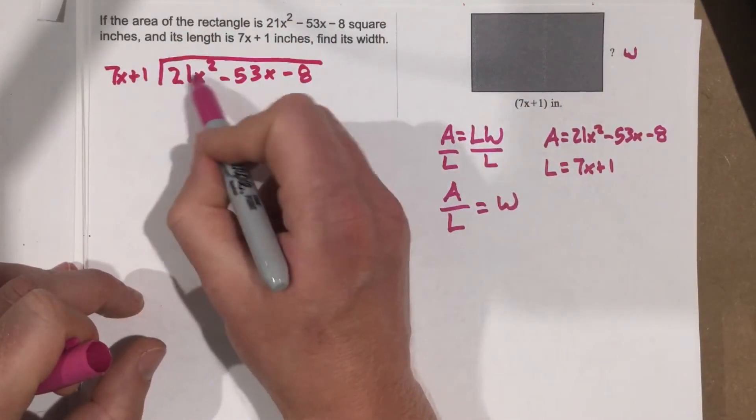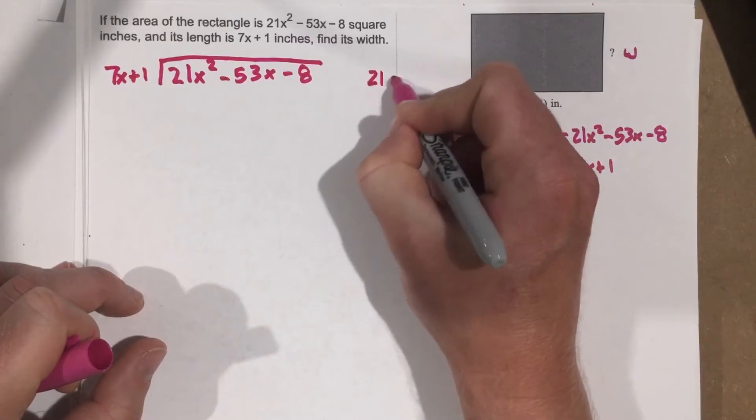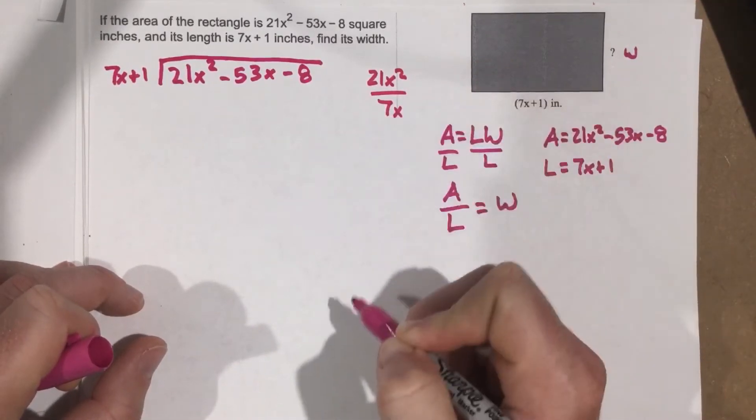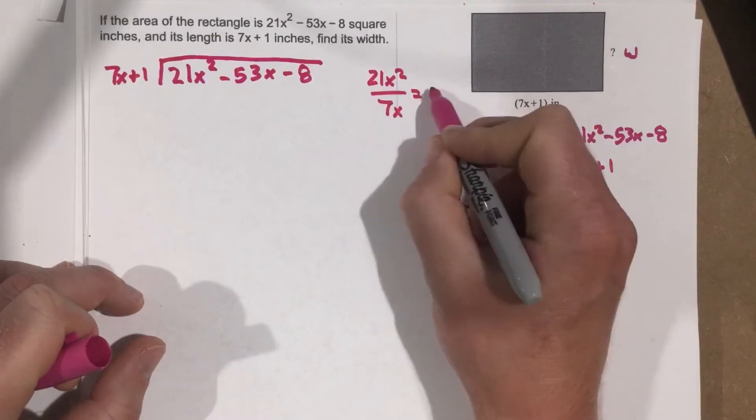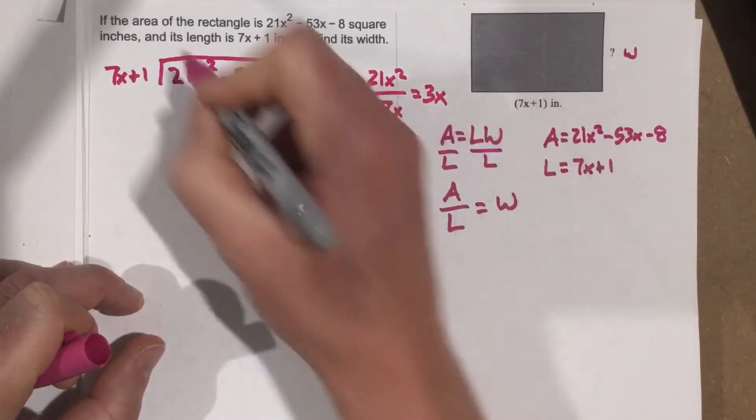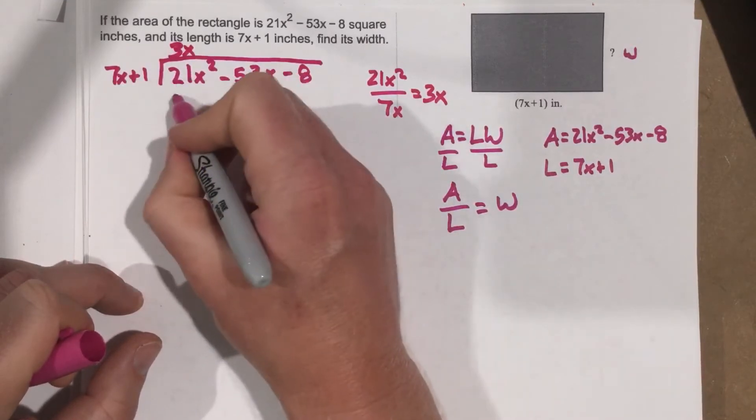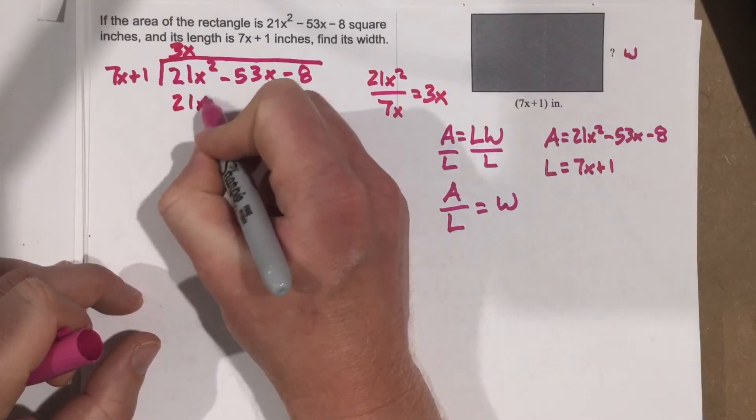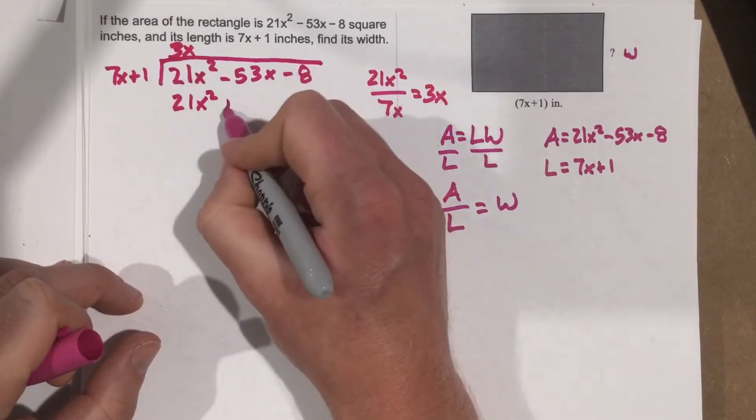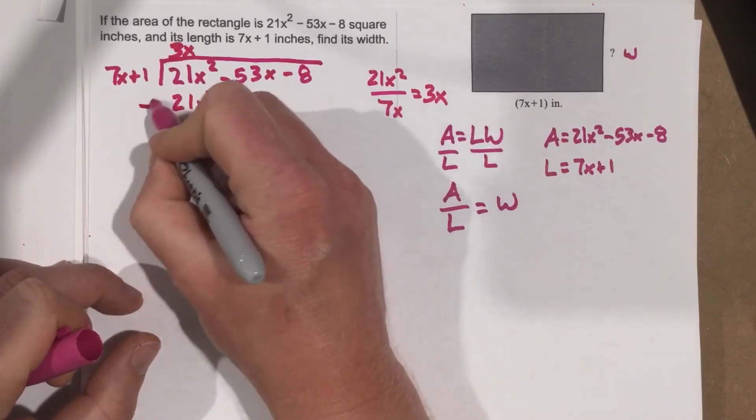7x goes into 21x squared. We write that here, 21x squared over 7x. That's going to reduce to 3x. So this is 3x. Multiply it, we get 21x squared plus 3x.